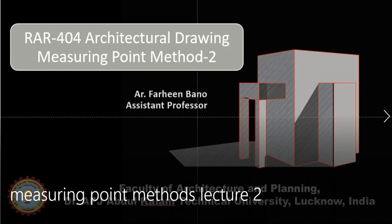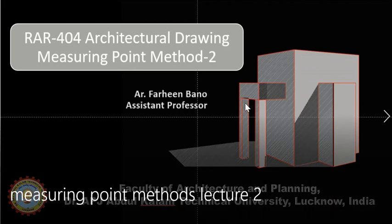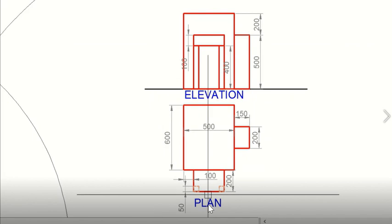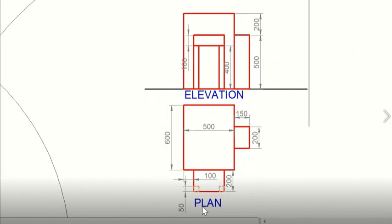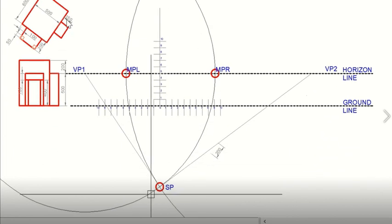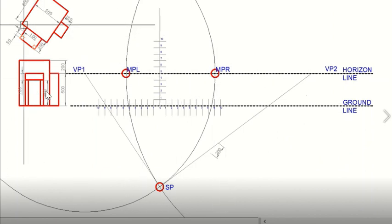In this lecture we will study how to make a two-point perspective using the measuring point method of a somewhat complicated figure. Previously we made the perspective of a cuboid. Now this figure has two blocks, a projection, and columns. This is the elevation of the figure, and this is the plan. We have assumed we tilted the figure so that this point is touching the picture plane.